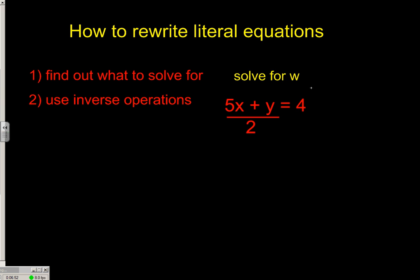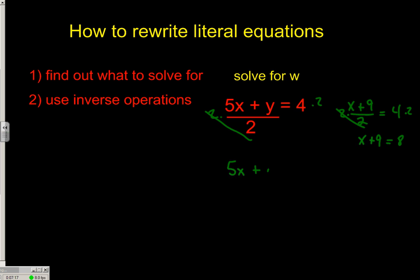So how would we handle something like this? Much in the same way that we handled x plus 9 divided by 2 equals 4 — you would multiply both sides of the equation by 2 first, and we were left with x plus 9 equals 8. Well here, since all of 5x plus y is being divided by 2, let's multiply both sides by 2. And we're left with 5x plus y equals 8. Now you're free to do the normal steps you're used to doing.